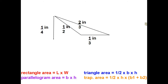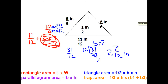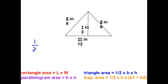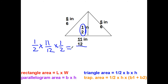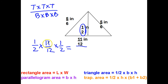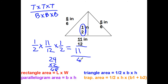For the area of a triangle: one-half times the base — eleven-twelfths — times the height — one-half. Multiplying three fractions means top times top times top over bottom times bottom times bottom. One times eleven times one is eleven. Bottom: two times twelve is twenty-four, times two is forty-eight. The area is eleven forty-eighths square inches.